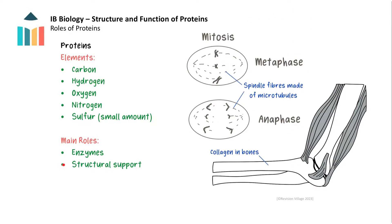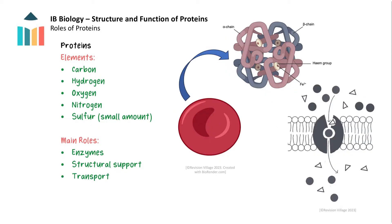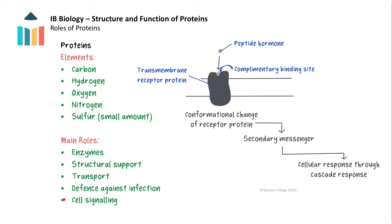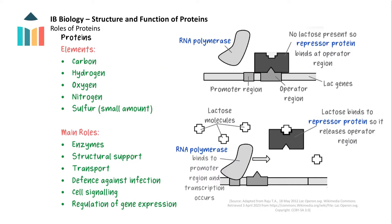Structural support, for example collagen in bones and microtubules within cells. Transport, for example haemoglobin in red blood cells and carrier proteins in plasma membranes. Defence against infection, for example antibodies and antimicrobial proteins. Cell signalling, for example hormones and receptor proteins. And regulation of gene expression, for example transcription factors.